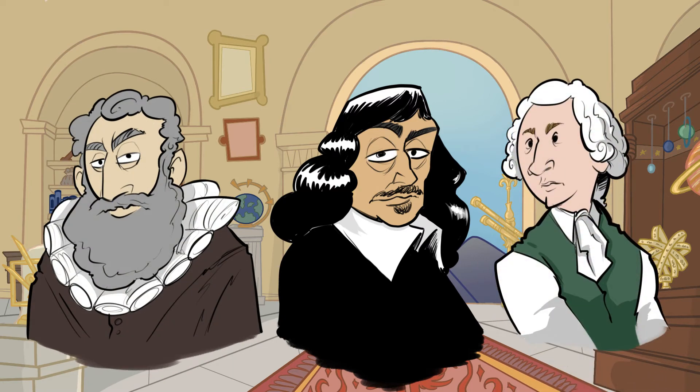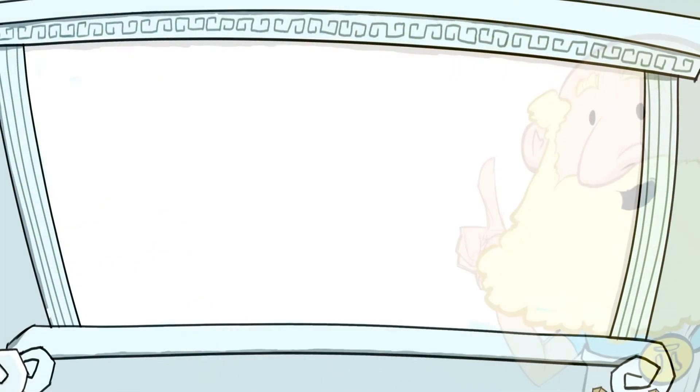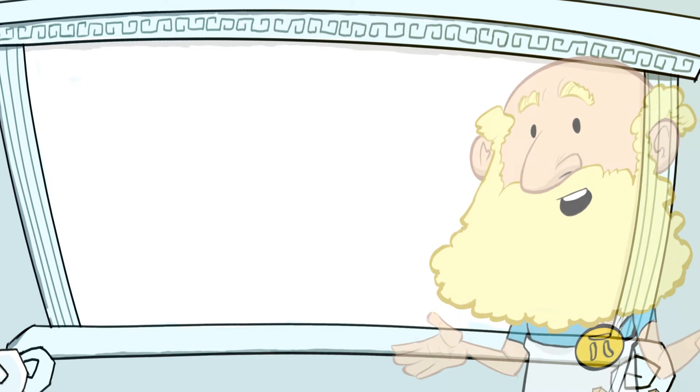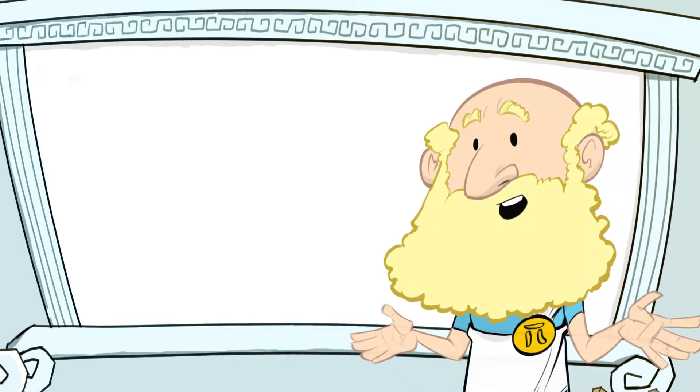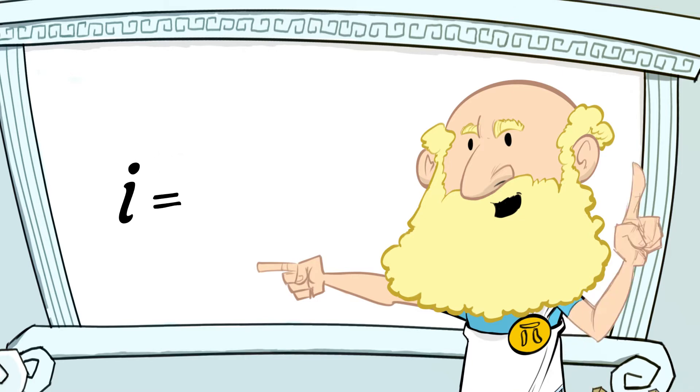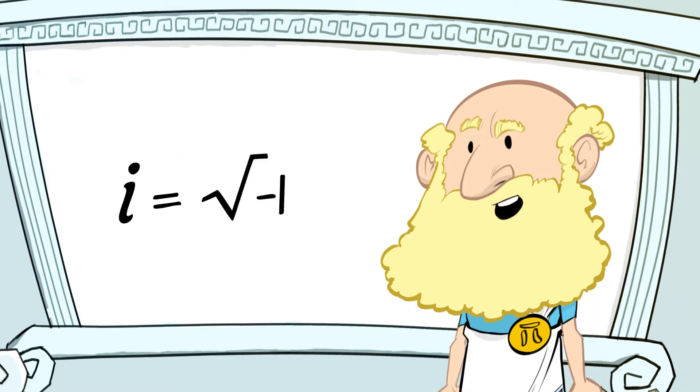The mathematical community did not approve and made fun of these numbers, calling them fake imaginary numbers. The name imaginary stuck, even though today these numbers have real world applications. We use the symbol i to represent the square root of negative 1. This i indicates that the number is an imaginary number.